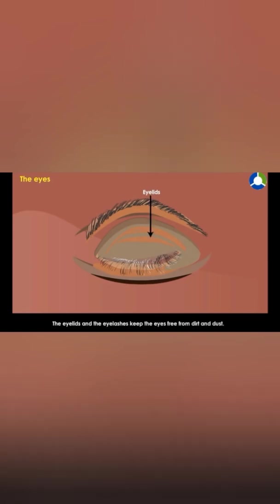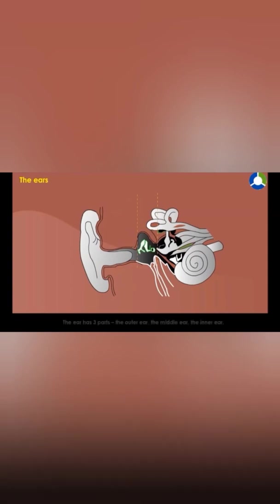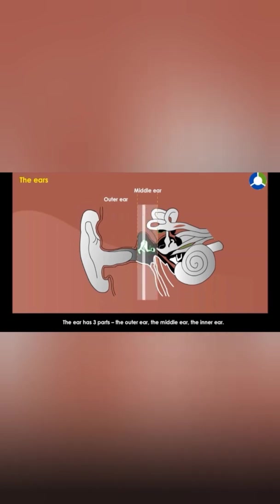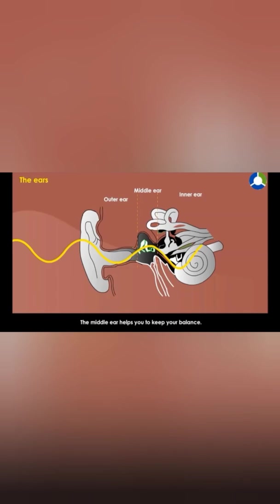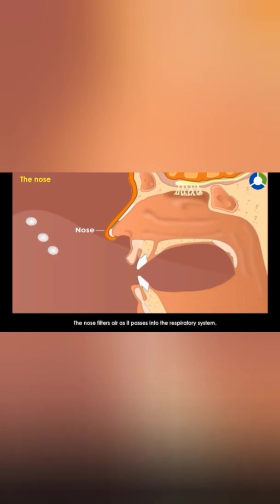The eyelids and eyelashes keep the eyes free from dirt and dust. The ears are the organs of hearing. The ear has three parts: the outer ear, the middle ear, and the inner ear. The outer ear catches and sends sounds to the inner ear, and the middle ear helps you to keep your balance.